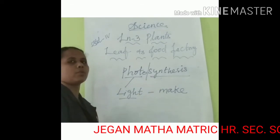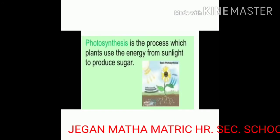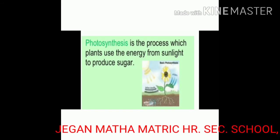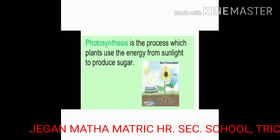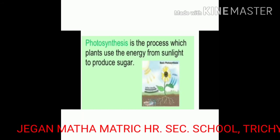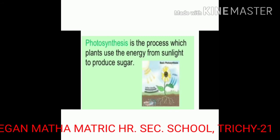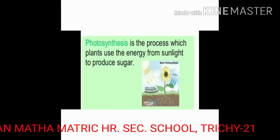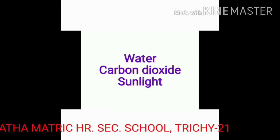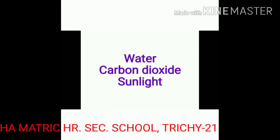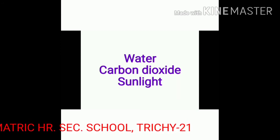Now let us see about the process of photosynthesis. It is a process by which plants use the energy from sunlight to produce sugar. Photosynthesis is a process by which plants make their own food using chlorophyll, which involves water and carbon dioxide in the presence of sunlight.